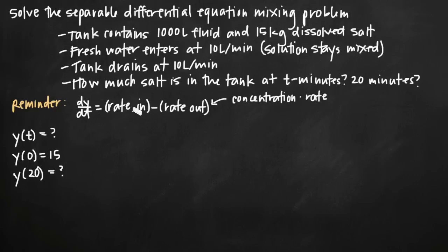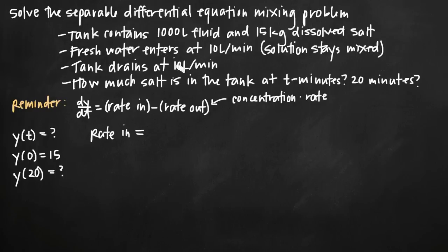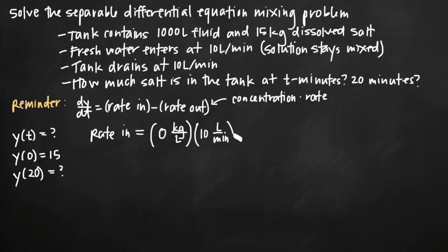For rate in, the only thing entering the tank is fresh water at 10 liters per minute. Because it's fresh water, the concentration of salt entering is zero kilograms per liter. So rate in equals zero kilograms per liter times 10 liters per minute, which gives zero kilograms per minute.